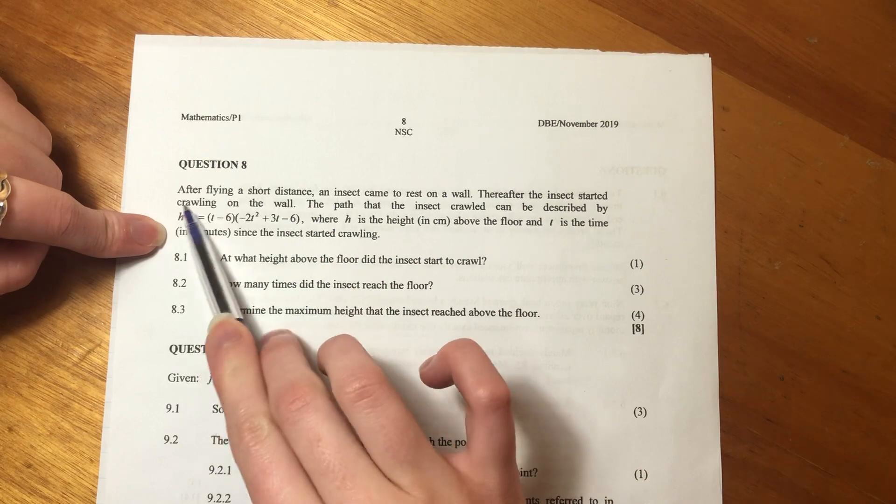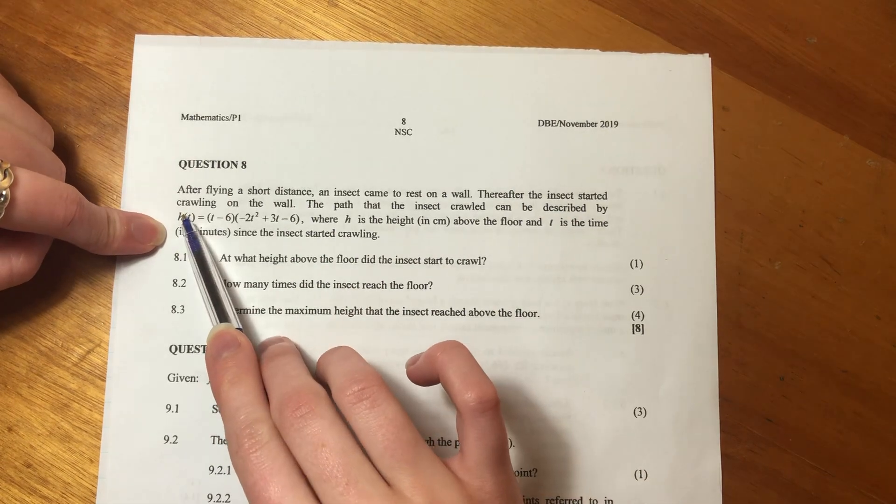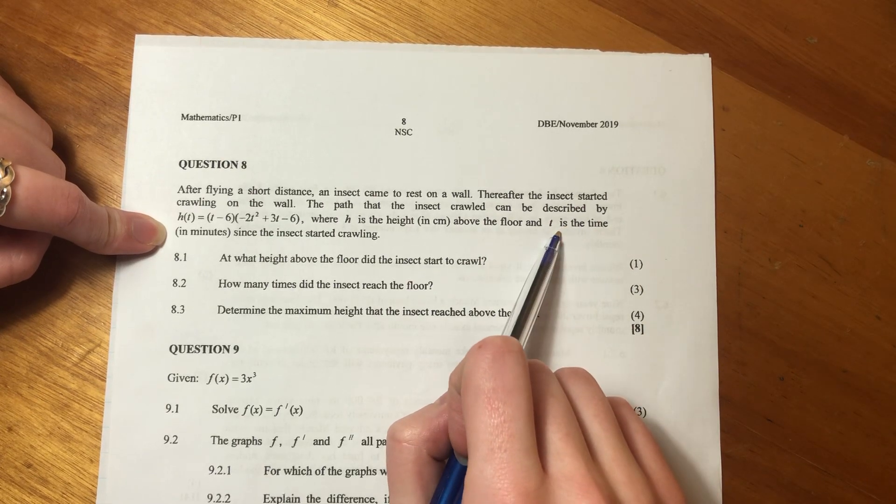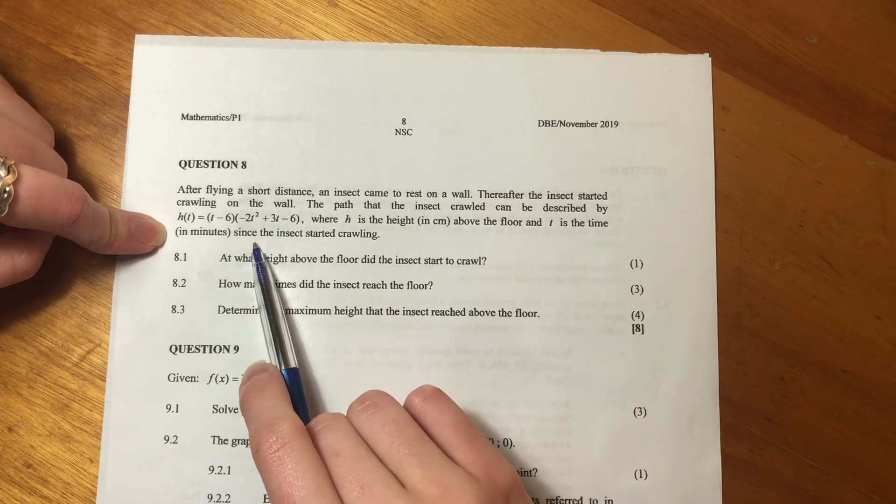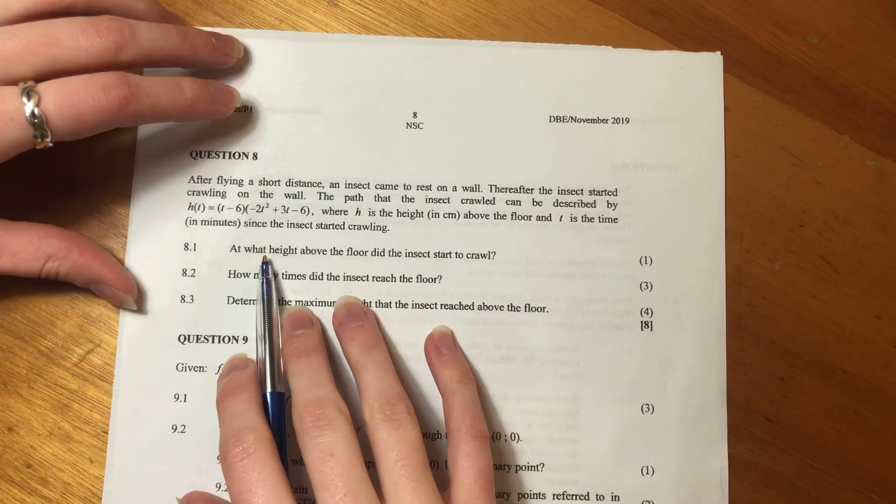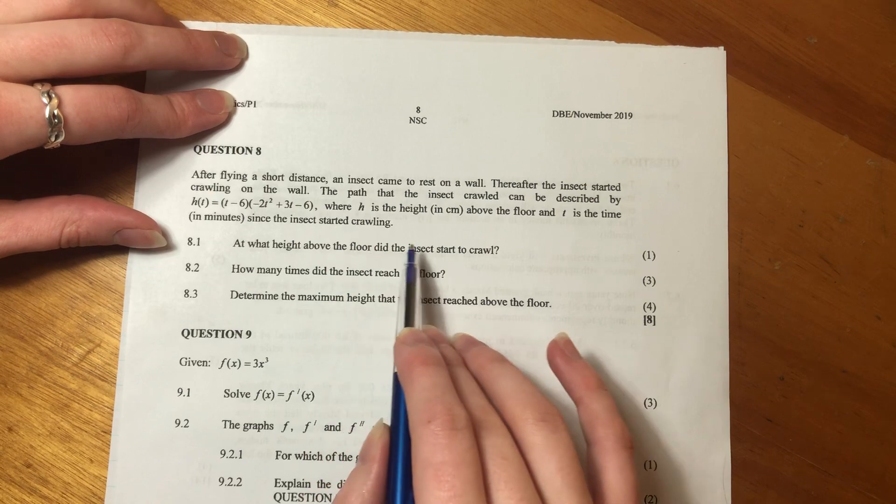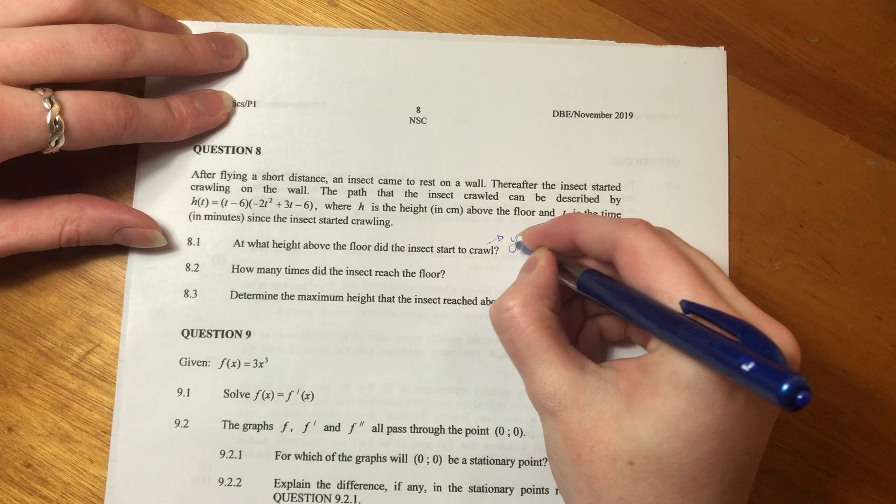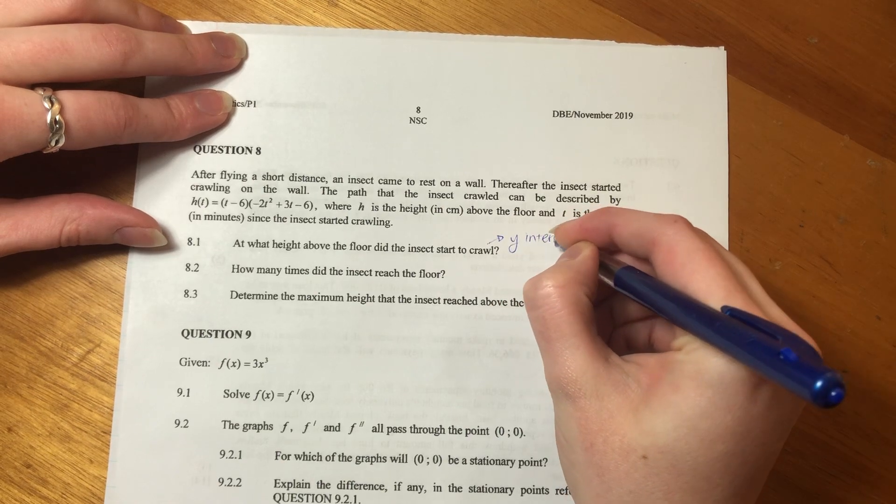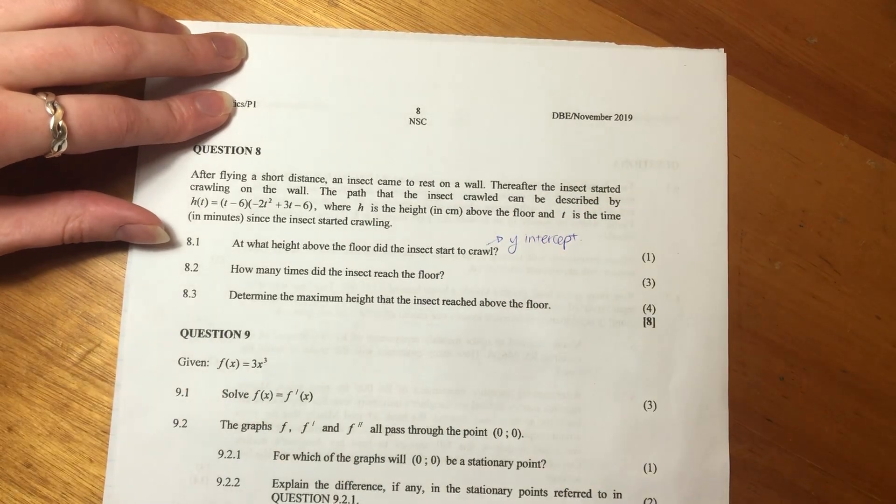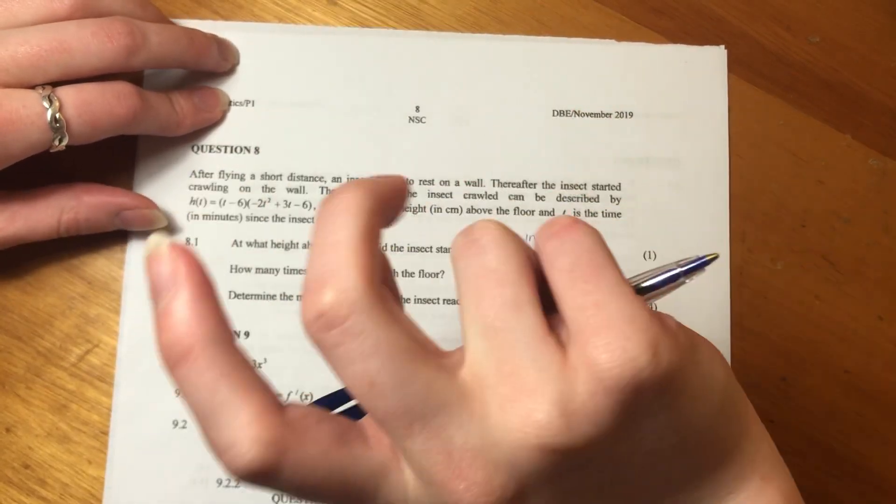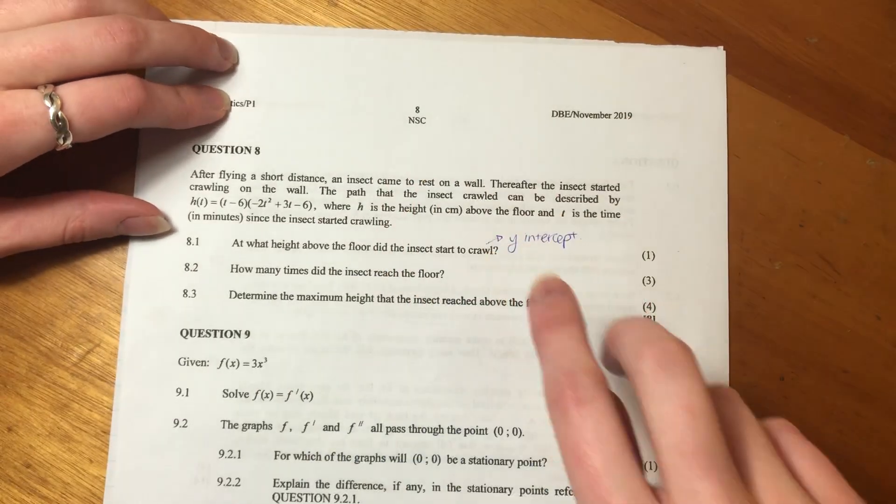Where H, so basically the dependent variable, is the height above the floor and T is the time. So time is your independent variable. And then it says, since the insect started crawling, at what height above the floor did the insect start to crawl? Another way of saying that is, what is the Y intercept? Because they're basically saying, where did it start on that wall before it started crawling? That's what they want to know.